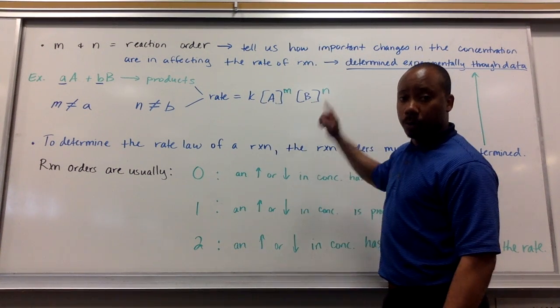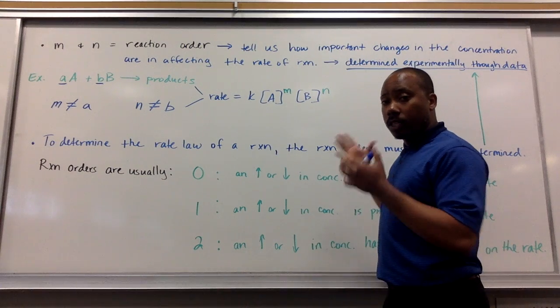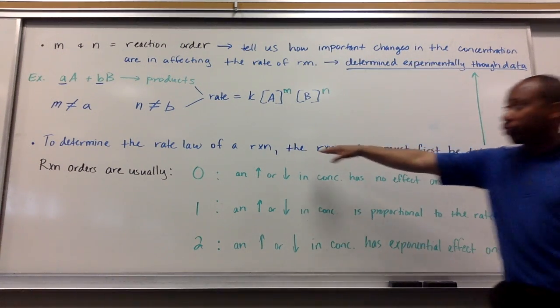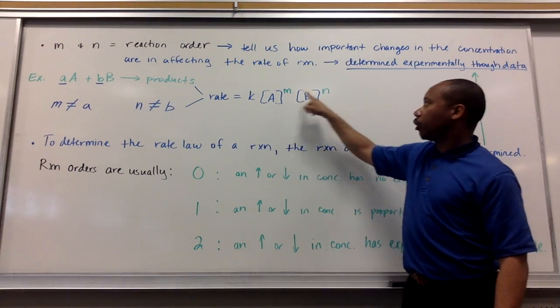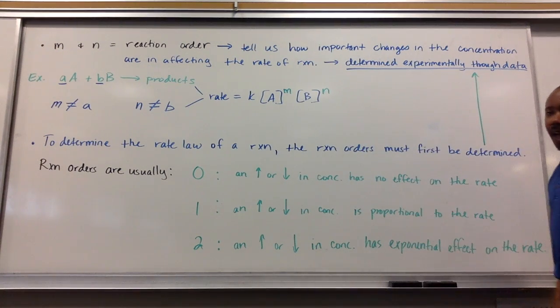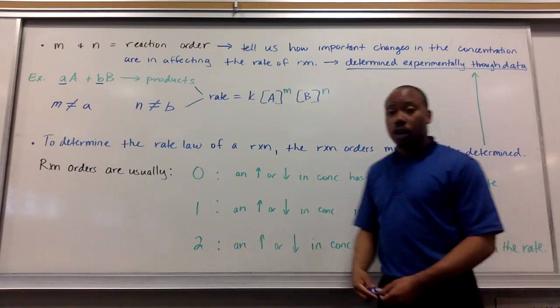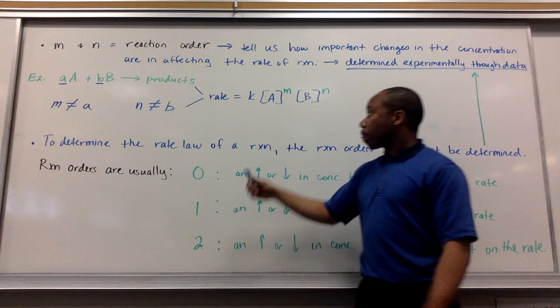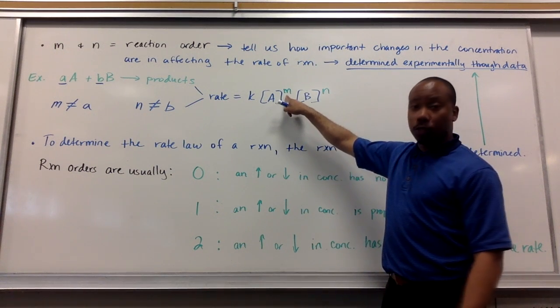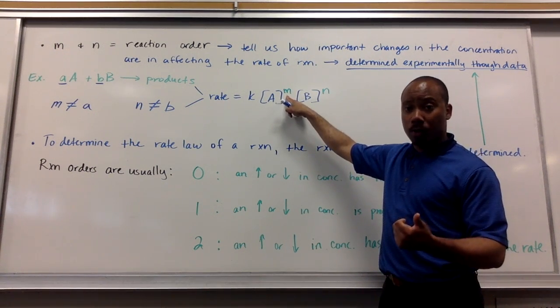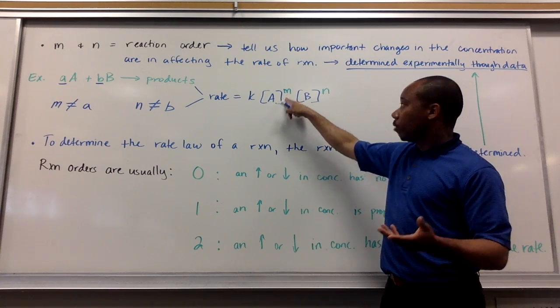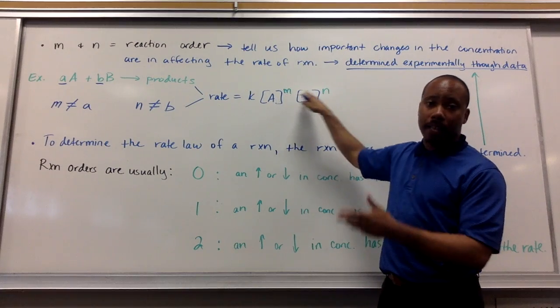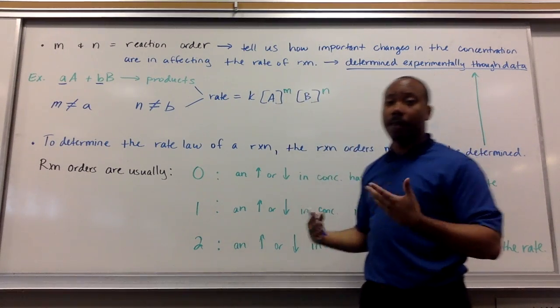Now, let's talk about how we do determine the orders of reaction. Before we get there, actually, to determine the rate law of a reaction, this thing here, you have to first determine the orders of your reaction. Reaction orders are generally, usually going to be 0, 1, or 2. Meaning, above this, as a superscript, are going to be numbers. The numbers are either going to be 0, 1, or 2. And they can change between these two. They don't both have to be 0. They don't both have to be 1. This can be 0 at one point. That could be 1. This could be 2. That could be 0. It doesn't matter.